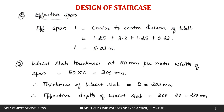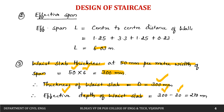Next, we calculate the waist slab thickness. We take 50 mm per meter width of span. As our span is 6 meters, 50 multiplied by 6 gives 300 mm. So thickness of waist slab D is taken as 300 mm. Therefore effective depth d equals overall depth minus effective cover, that is 300 minus 30, giving 270 mm.